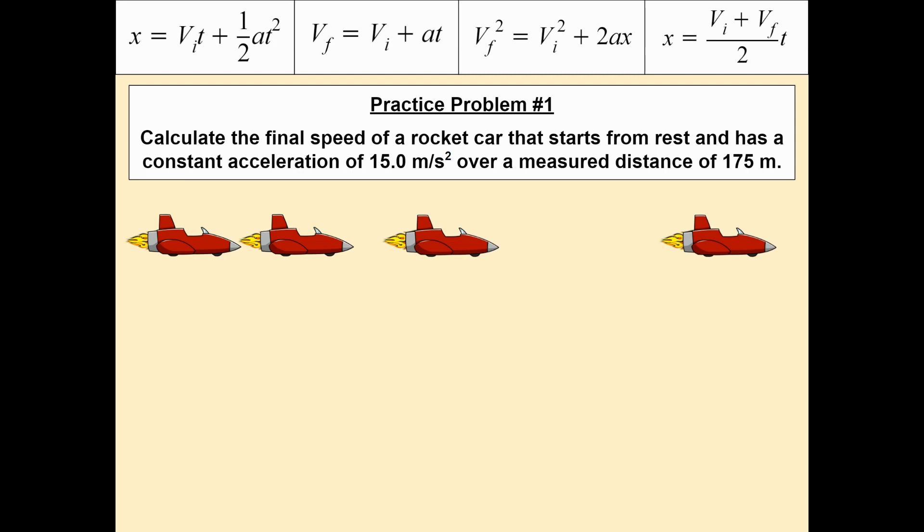So what do we know about this situation? We know a few things. We know that it starts out with no velocity because they say it starts from rest. From rest is a fancy way of saying not moving. So I can assume that the initial velocity of this rocket car is 0 meters per second. Can I assume anything else? Well yes, I can assume that the acceleration of this rocket car, as a result of the rocket on the back, is 15 meters per second squared.